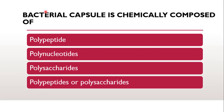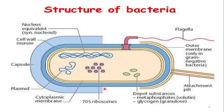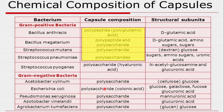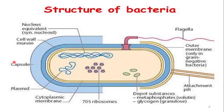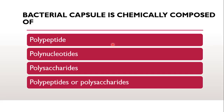Next question: bacterial capsule is chemically composed of — polypeptide, polynucleotide, polysaccharide, or polypeptide and polysaccharides? The chemical composition of the capsule contains polypeptides and polysaccharides. Capsules are also known as slime layers when diffused, and are secreted by the cell wall of bacteria. So the bacterial capsule is chemically composed of polypeptides or polysaccharides.